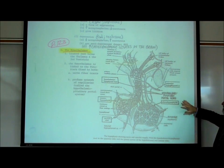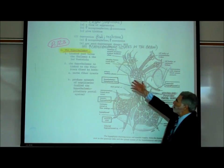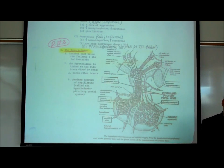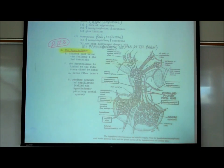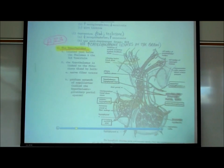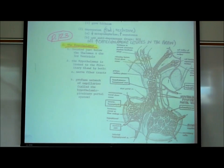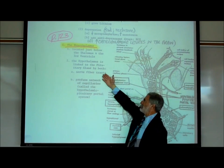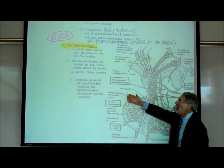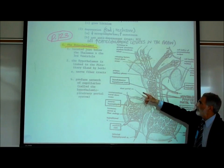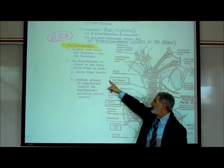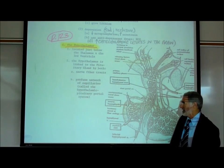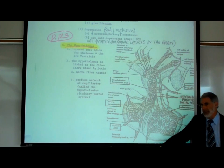The hypothalamus is called that because it's located below — hypo — below the thalamus. The hypothalamus is linked to the pituitary gland by both nerve fiber tracts and by a profuse network of blood vessels, of capillaries.